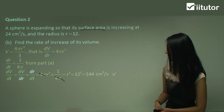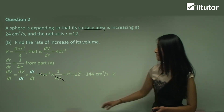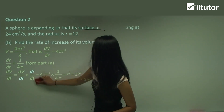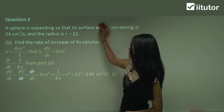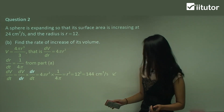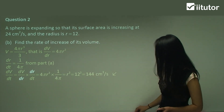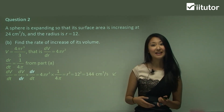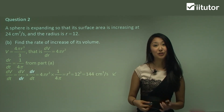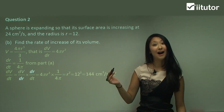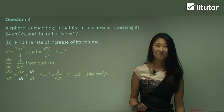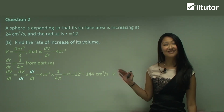What you need to take away from this question is that sometimes you do need to use information from the previous part of the question. You can see that we needed the result from part A. In your working out, write 'from part A' so you show the examiner where you're getting that information from.